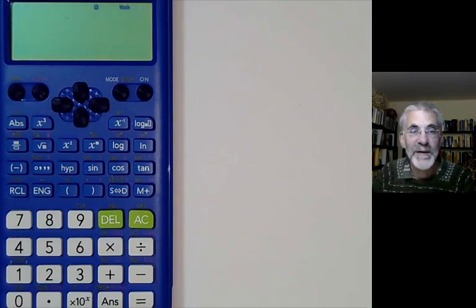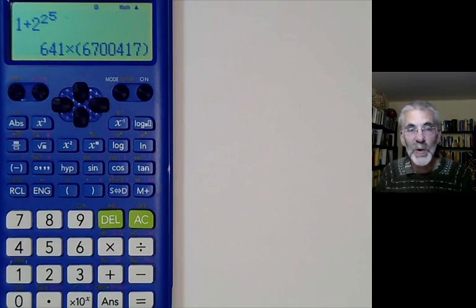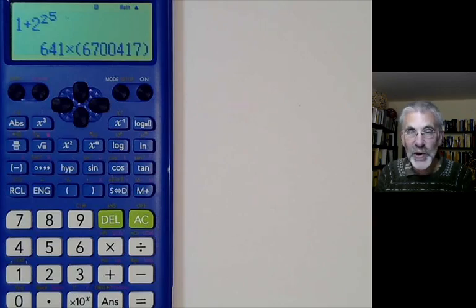If we factorise it, it tells us that one of the factors is 641, which was the factor found by Euler. So if Fermat and Euler had had this calculator, they would have saved themselves a good deal of time and trouble.